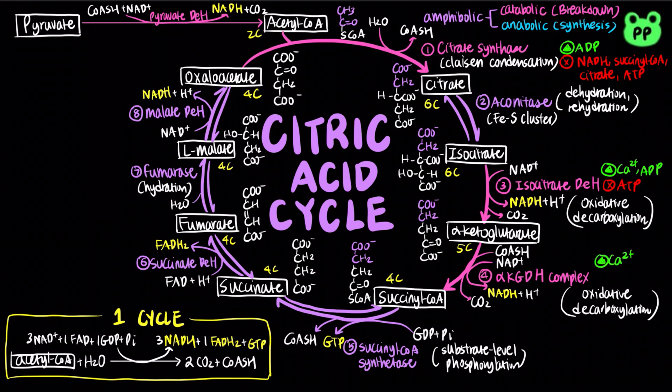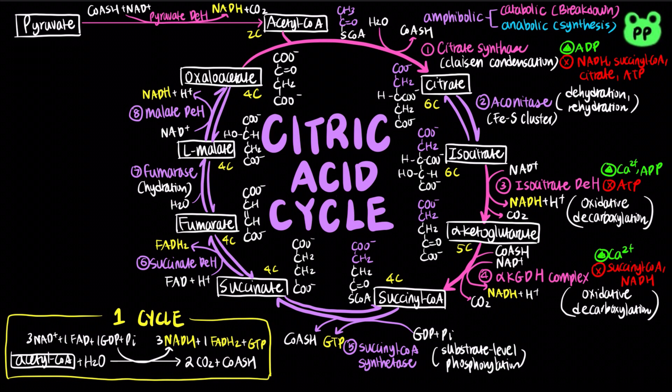Alpha-ketoglutarate dehydrogenase complex is activated by calcium ion and inhibited by succinyl-CoA and NADH. In vertebrate muscle, calcium ion is a signal for contraction and increased demand for ATP. Therefore, it activates both isocitrate dehydrogenase and alpha-ketoglutarate dehydrogenase. Succinyl-CoA serves as an important intermediate in feedback inhibition of both citrate synthase and alpha-ketoglutarate dehydrogenase complex.